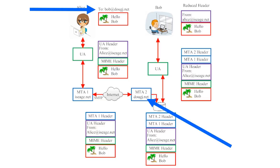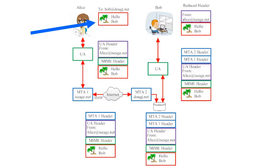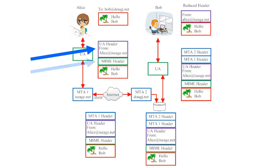Every email keeps an official record of what it is and where it's been. When Alice first composes the email, all it contains is a message and an address. However, once she hits send, her user agent attaches a header that gives the recipient more information — including a return address showing who the email came from. It also adds something called a MIME header. MIME stands for Multi-Purpose Internet Mail Extension. Email protocols were originally designed to handle only plain text messages, but MIME allows email systems to work around this limitation. The MIME header allows emails to carry different design elements beyond plain text, such as images, special fonts, and file attachments.